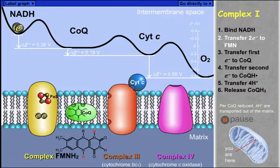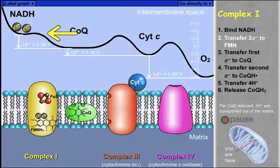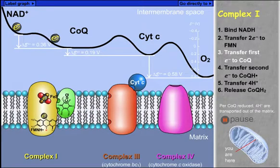Note that the activation barrier on the energy graph has been lowered, representing schematically the catalytic role of complex I. FMNH2 passes its electrons one at a time to the mobile carrier, ubiquinone, or coenzyme Q, abbreviated here as CoQ. This is possible because FMN has a stable radical oxidation state, known as FMNH·.